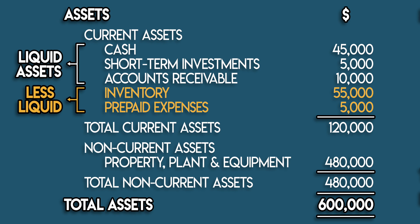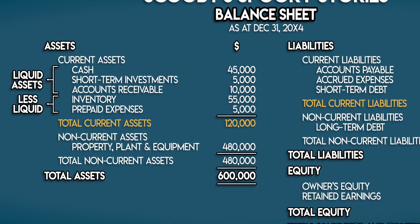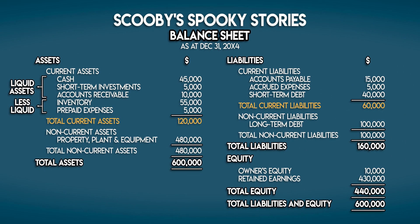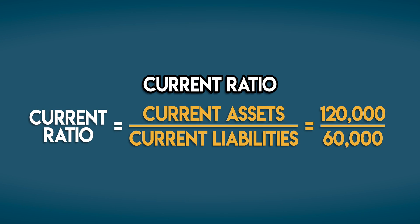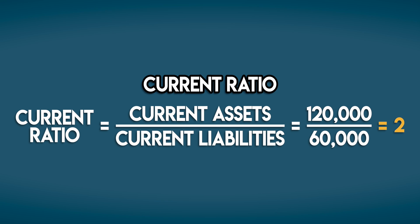The current ratio is the least conservative liquidity ratio because it takes into account all current assets, even the less liquid ones. We can work out our bookstore's current ratio by dividing current assets of $120,000 by current liabilities of $60,000, which gives us 2 to 1. So Scooby's Spooky Stories can cover its short-term obligations with its current assets twice over.